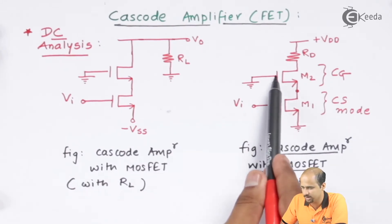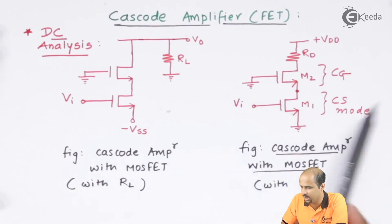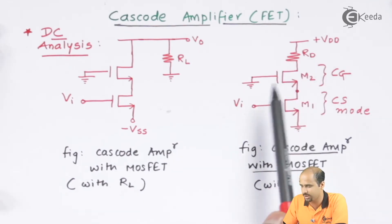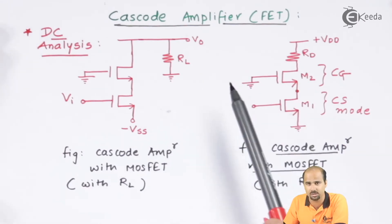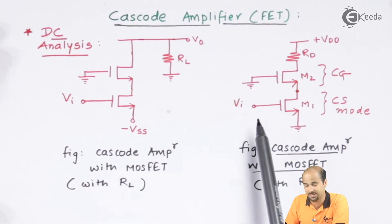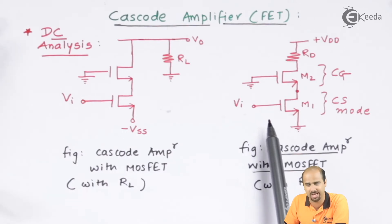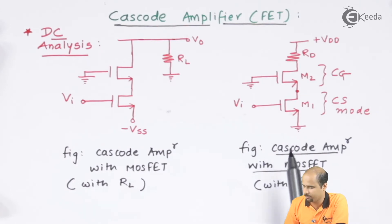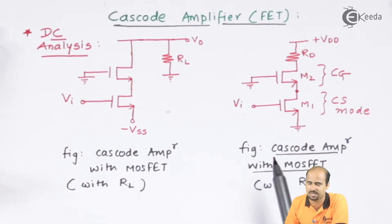The input is directly connected to the gate, and the second transistor's gate is directly connected to the ground terminal. The output has one resistor, Rd. Notice there are no gate resistors here, unlike the cascode amplifier with BJT where base resistances were present. This is your complete cascode amplifier with MOSFET — you can consider the same circuit with JFET and will get the same result.